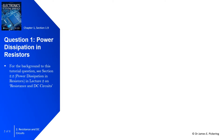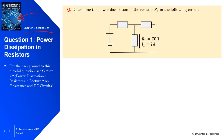Question one is based on power dissipation in resistors. For further reading, this lecture was based on Electronics and Systems Approach by Neil Storey. This question is based on the given circuit — we want to determine the power dissipation in resistor R1, where R1 is 70 ohms and the current passing through this resistor is 2 amps.